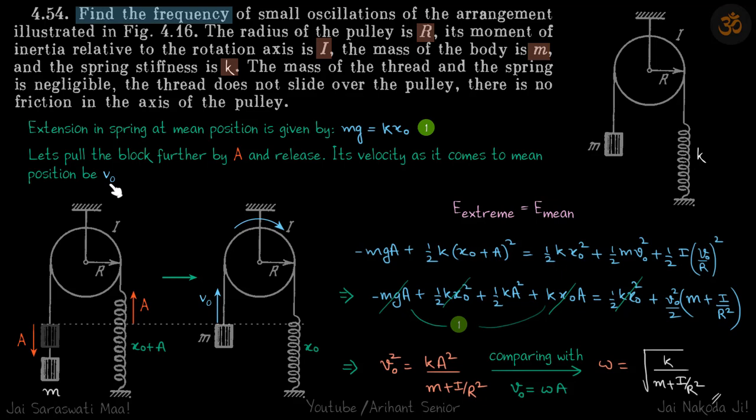When you pull this down by distance a, the extension in the spring becomes x₀ + a. When it's crossing the mean position, the extension is simply x₀, and mg = kx₀.